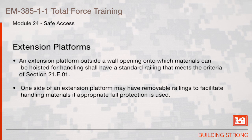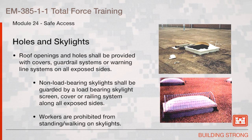One side of an extension platform may have removable railings to facilitate handling materials if appropriate fall protection is used. Roof openings and holes shall be provided with covers, guardrail systems, or warning line systems on all exposed sides. Non-load-bearing skylights shall be guarded by a load-bearing skylight screen, cover, or railing system along all exposed sides. Workers are prohibited from standing or walking on skylights.